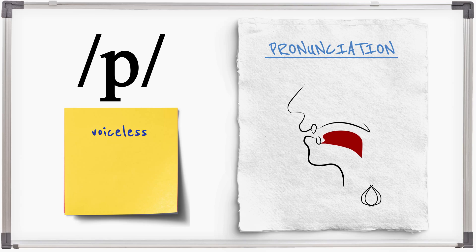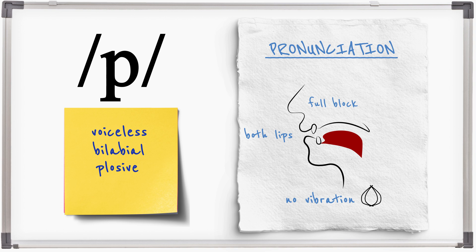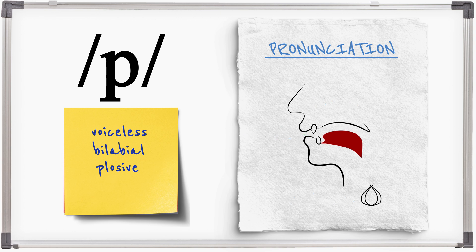Is a voiceless, bilabial, plosive, made by closing the lips and blocking the flow of air completely. It is normally released by opening the lips and this release is normally aspirated with a puff of air.